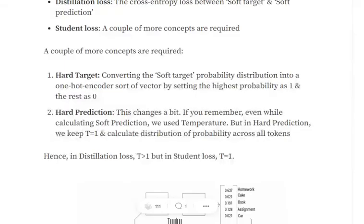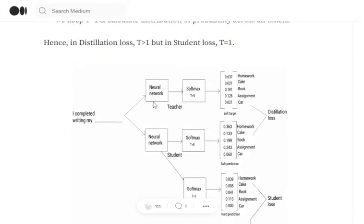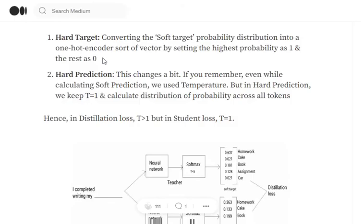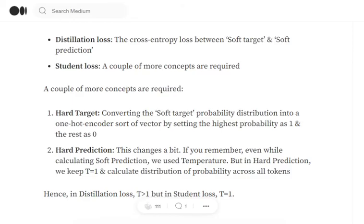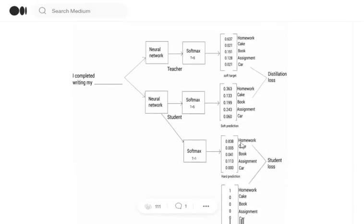Hard target is derived from the teacher model's soft targets by converting probabilities to zeros and ones — we take the highest-probability class and produce a one-hot vector, which is how multi-classification predictions work in real-world deployments. Hard prediction is a separate set of predictions from the student network, but with temperature T=1, meaning we use standard softmax rather than softmax temperature, and we get another set of predictions called hard predictions.